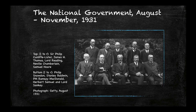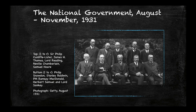In the national elections in August of 1931, there was a new national government. Looking at some of these people, they become very important later on: Lord Reading, Neville Chamberlain at the top, Lord Snowden, Stanley Baldwin, Ramsey MacDonald, Herbert Samuel, and Lord Sankey. All of these people were very important during the 1930s and early 1940s.